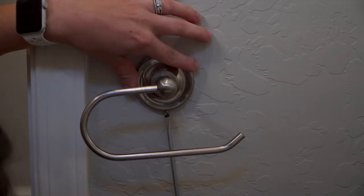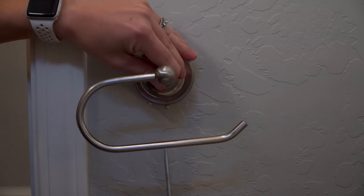Remove the flathead screw under the toilet paper holder by turning counterclockwise. Lift the toilet paper holder off the wall.